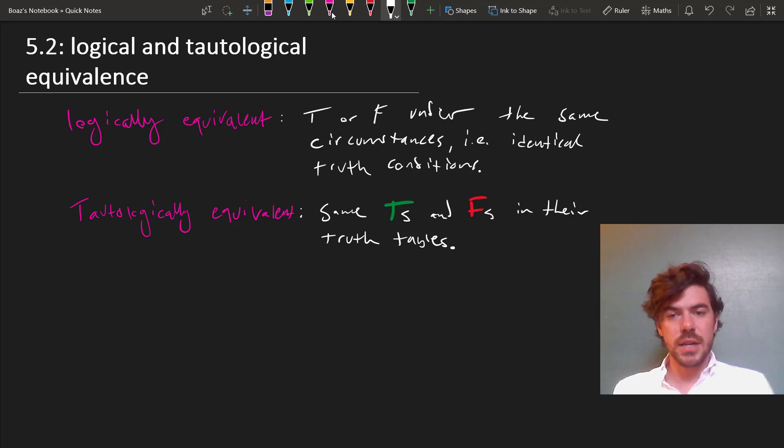If we harken back to our Venn diagram in the earlier video, we'll notice that every tautology is also a logical necessity, but not the other way around. And likewise, every tautological equivalence is a logical equivalence, but not the other way around.